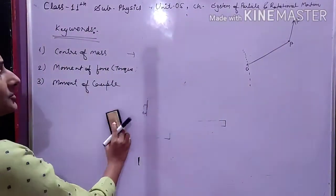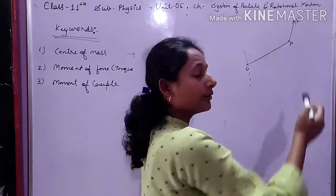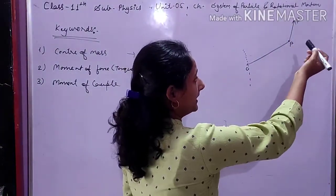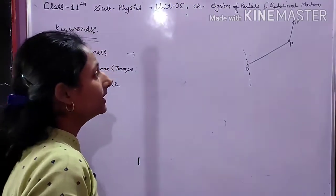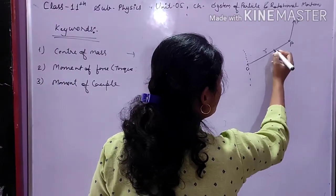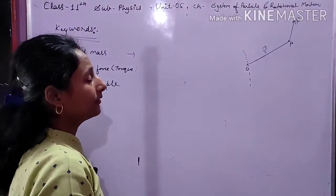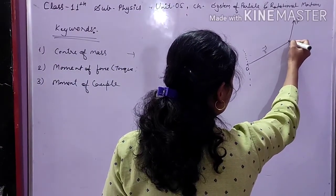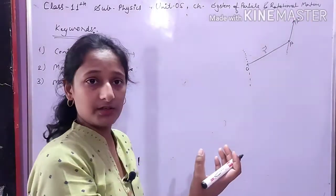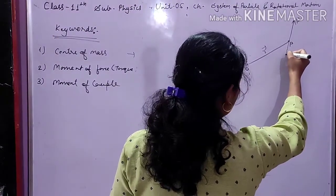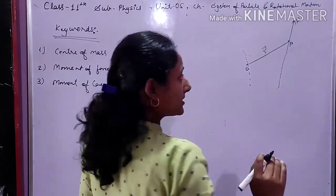So here we were discussing moment of force. We have taken point P, applied force F on it, and this particle P rotates about point O. R is the position vector of OP. Now we find the line of action of force — the line of action of force is the extended line along which force F acts. This is our rotational axis, and we draw the line of action of force.